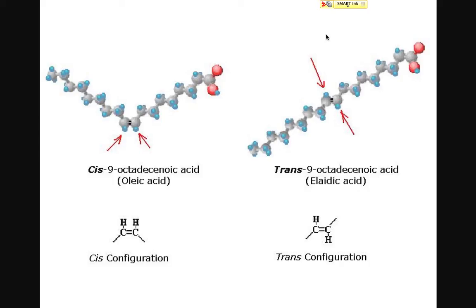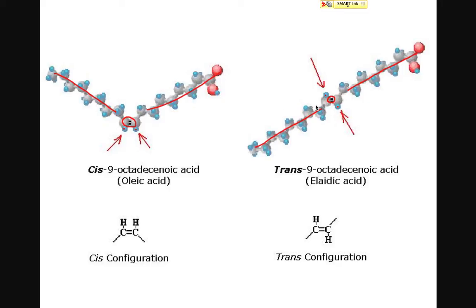One more piece to add to the puzzle. When you have an unsaturated fatty acid, it is possible for the orientation of the carbon-carbon double bond to be different. In a cis configuration, the hydrogen atoms or the rest of the molecule are on the same side of the carbon-carbon double bond, producing a bent or kinked shape. In contrast, in a trans configuration, the shape of the molecule is very different — it is linear, looking a lot more like a saturated fat. So trans fats are going to behave a lot more like saturated fats, while cis unsaturated fats will exhibit the typical properties of an unsaturated fat.